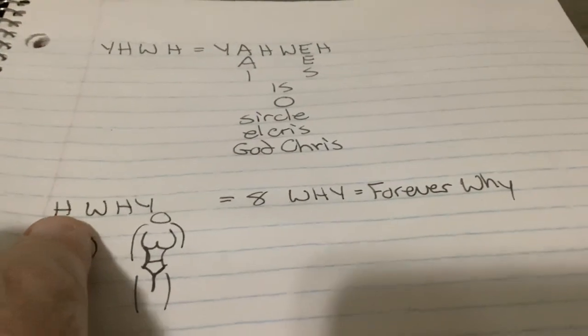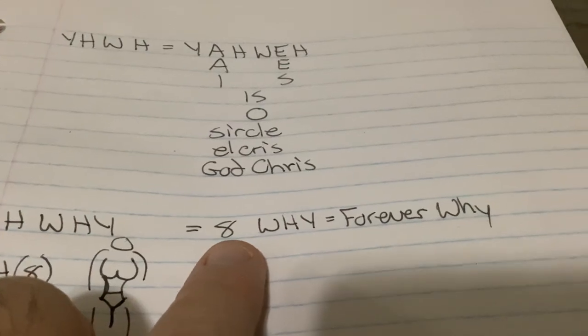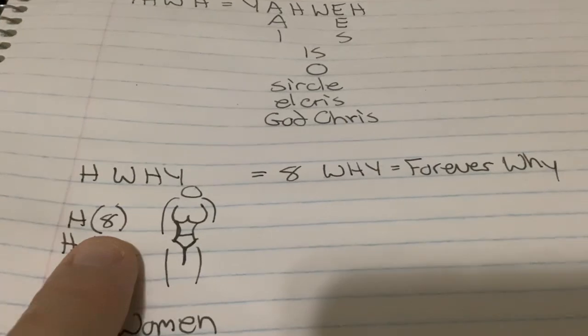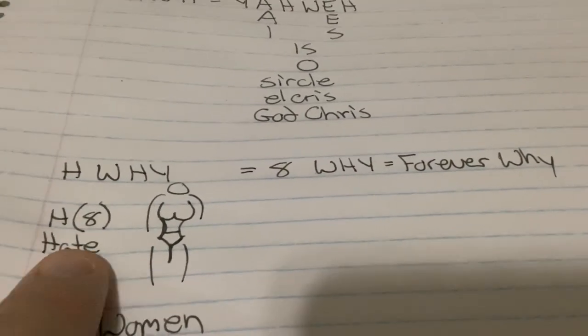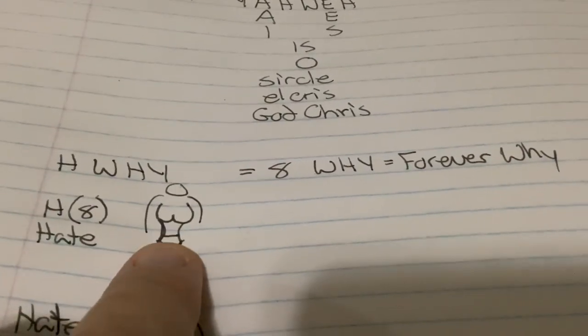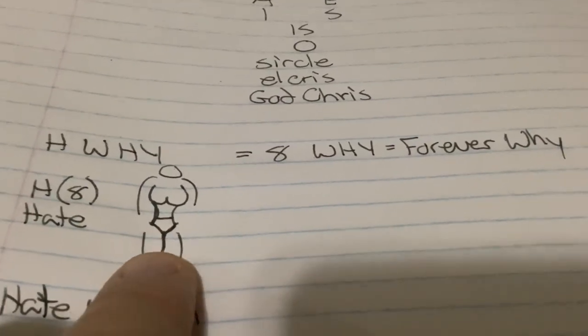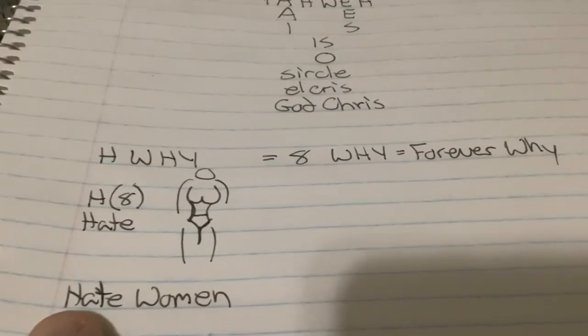Then you get backwards, it's H, Y, which this way is an 8 for infinity, and Y, so it's like forever Y. Then H is also an 8, so you get H8 is hate, and then you write Y vertically like this, and it's boobs, a waist, some underwear, and the thighs and stuff like that. So it's a woman, so it's like saying hate women.